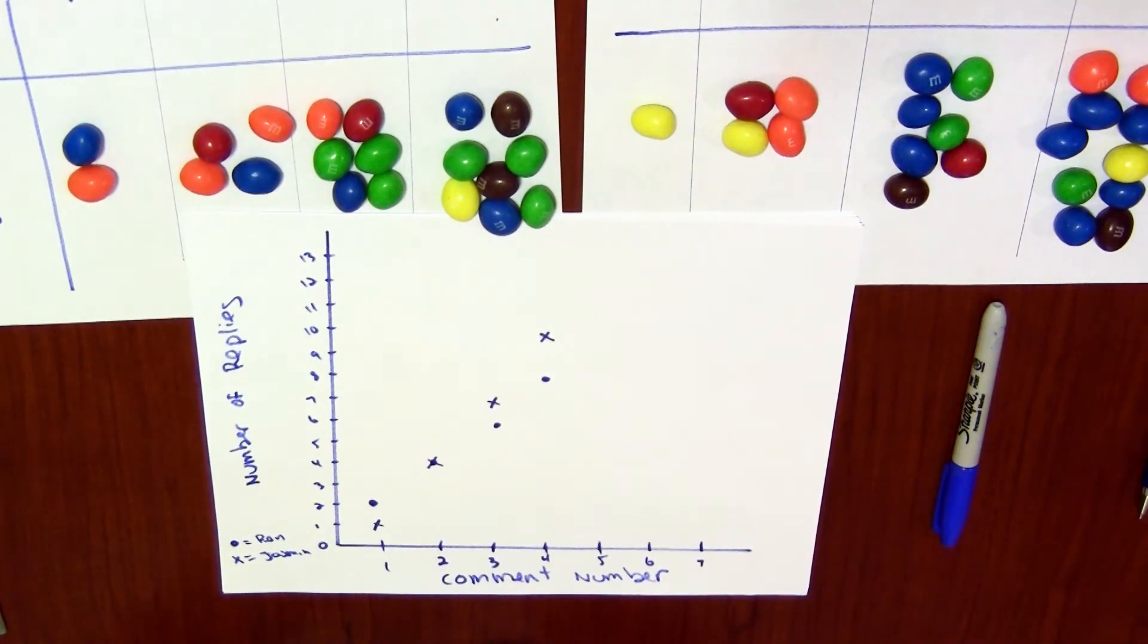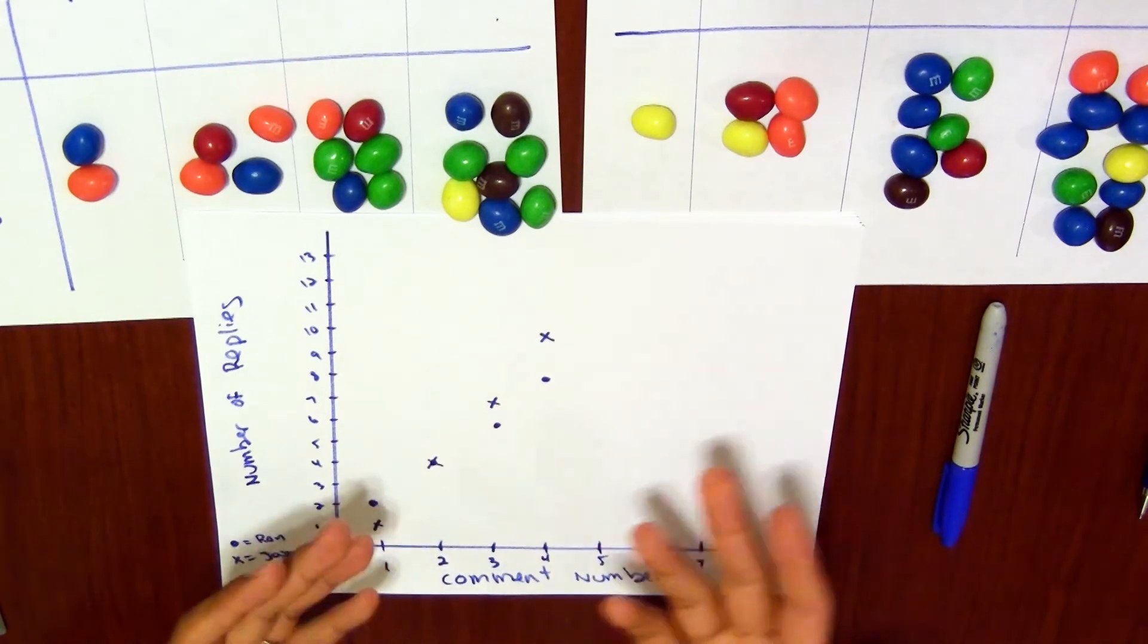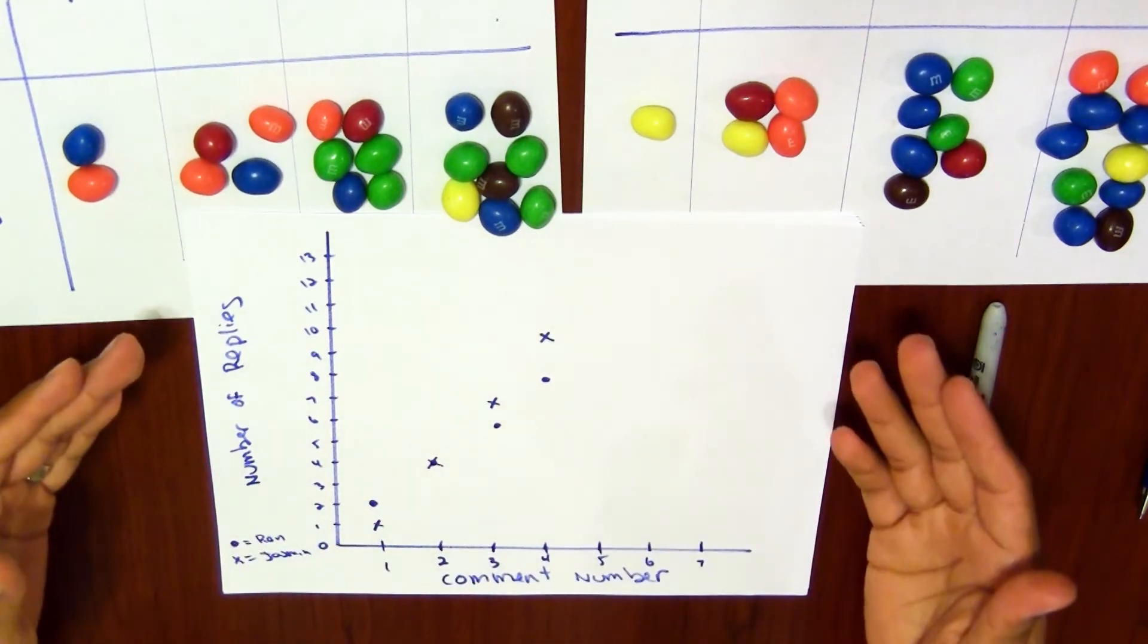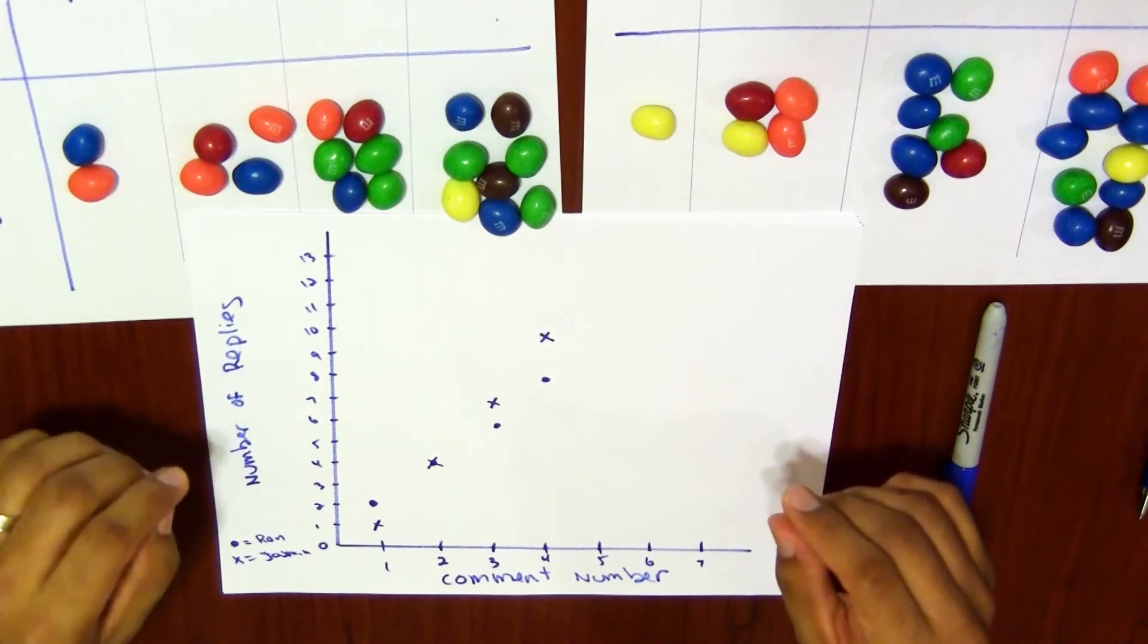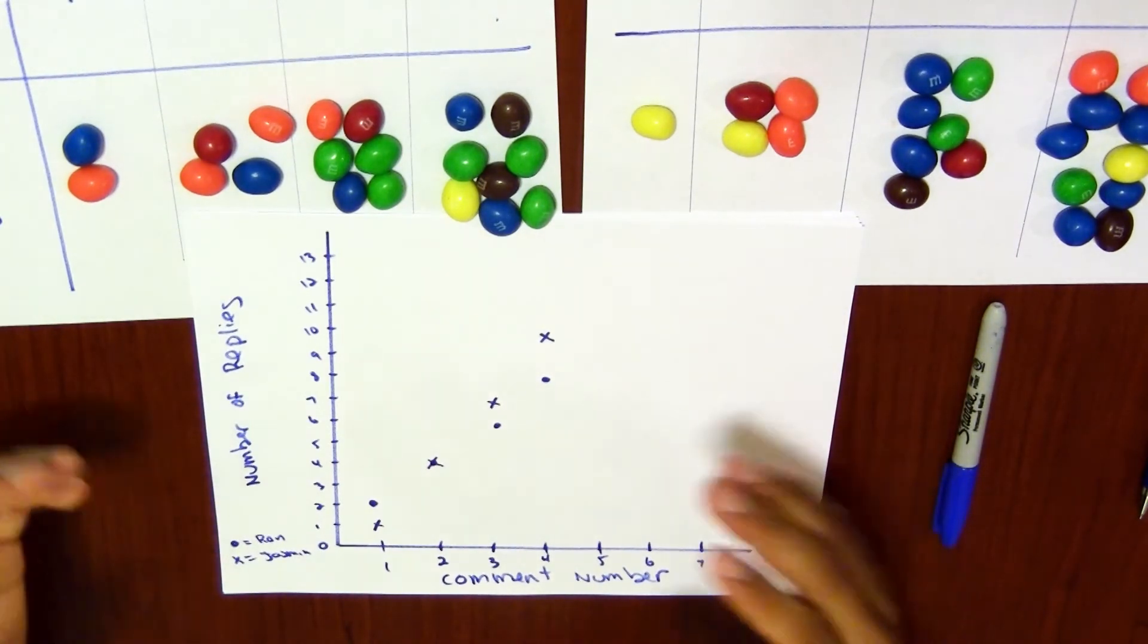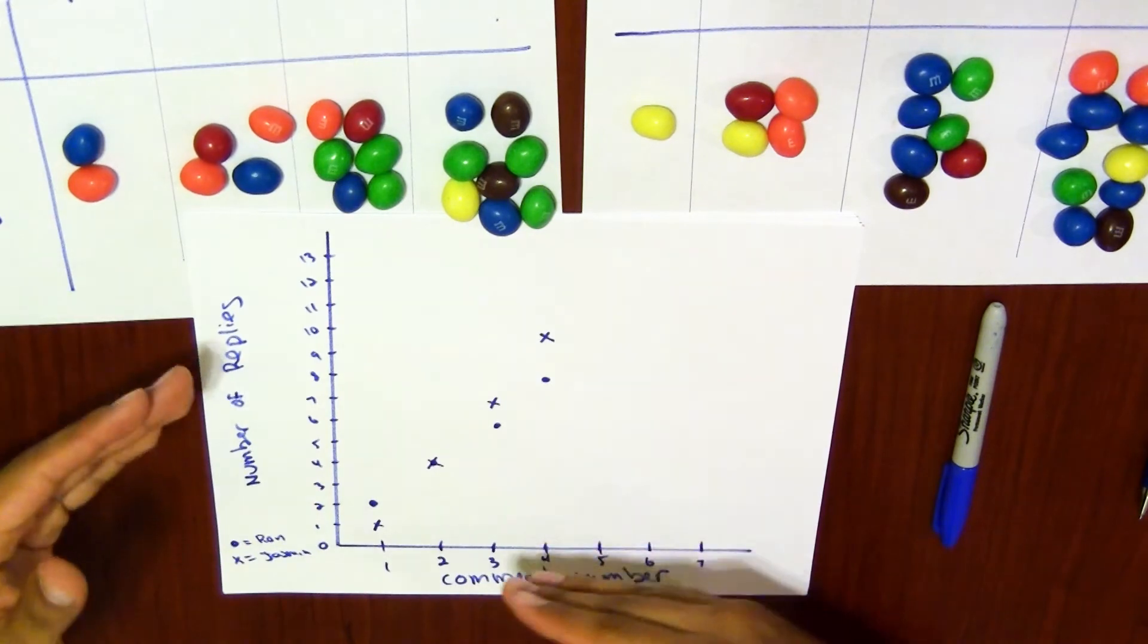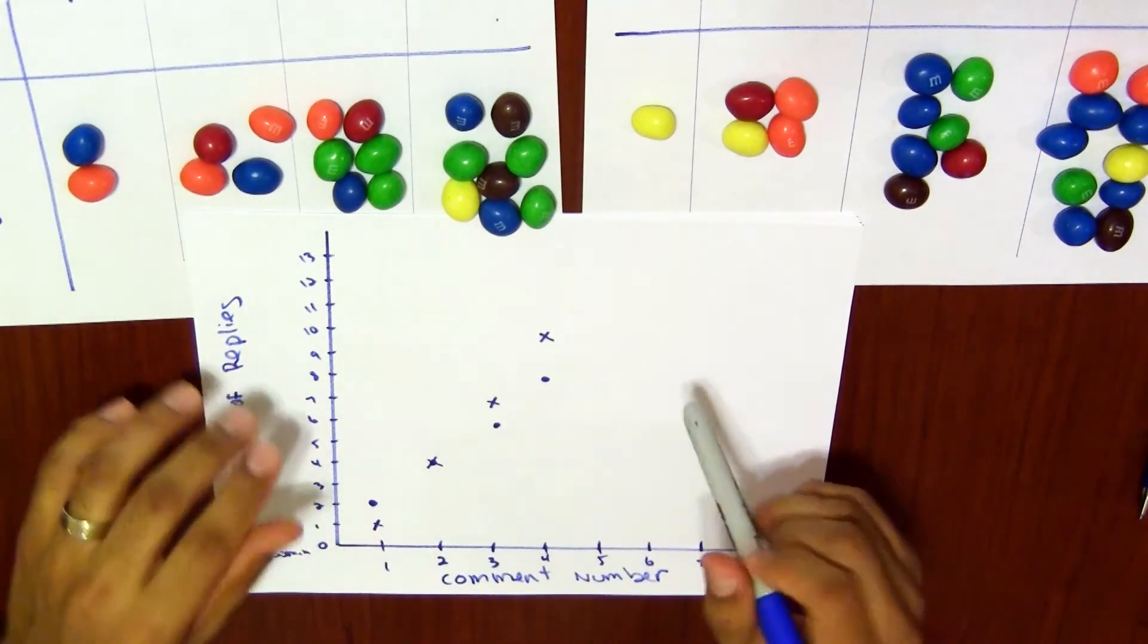They should see that one of them is going to go through the origin, the other one is not. You also want them to predict, let's say, the next two or three points that they should get if this pattern continues. And lastly, you can ask them to compare and contrast the relationship shown in each graph.